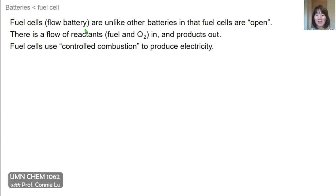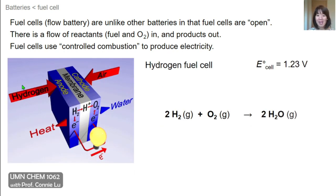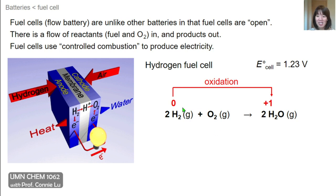Fuel cells are different from other batteries in that they are open systems, and for that reason they are sometimes called flow batteries because they have a flow in of reactants—typically a fuel source and oxygen gas—and an outflow of products. Because they use a fuel source and oxygen, fuel cells essentially do a controlled combustion redox reaction to generate electricity. Here's a schematic of a fuel cell that uses hydrogen as a fuel, where we have hydrogen plus oxygen to form water. This has a very positive cell potential of 1.23 volts in the standard state. If we follow the oxidation number changes, hydrogen is being oxidized and oxygen is being reduced.